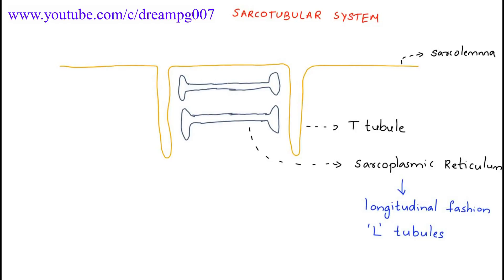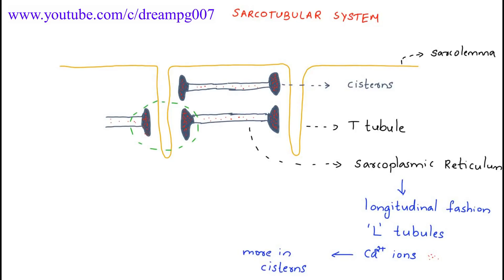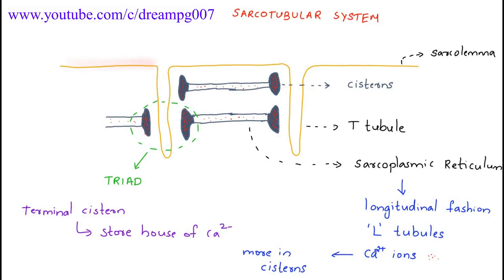The dilated end portion of the sarcoplasmic reticulum is called terminal cisterns. The calcium ions are present inside the sarcoplasmic reticulum, but the maximum concentration is seen in the terminal cisterns. The terminal cisterns on both sides and the t-tubule together form a triad, and the terminal cistern is a storehouse of calcium.